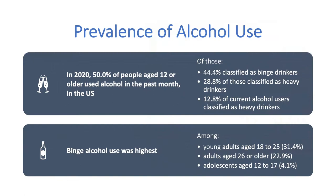In 2020, 50% of people aged 12 and older — about 138.5 million people — used alcohol in the past month. Among those current alcohol users, 61.6 million people or 44.4% were classified as binge drinkers, and 17.7 million people or 12.8% of current alcohol users were classified as heavy drinkers. The percentage of past-month binge alcohol users was highest among young adults aged 18 to 25 at 31.4%, compared with adults 26 or older at 22.9%, and adolescents aged 12 to 17 at 4.1%.